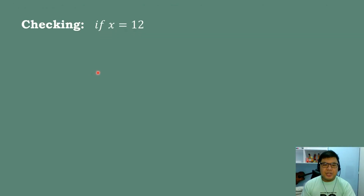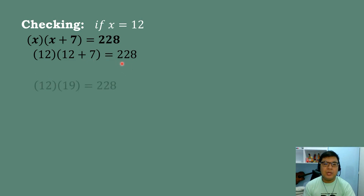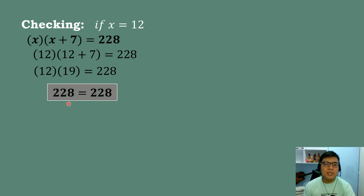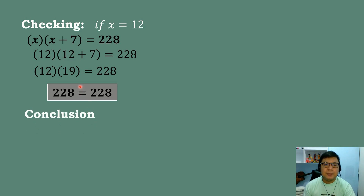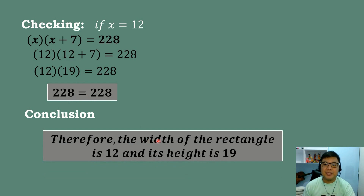Let's check our answer. If x equals 12, we substitute into the equation: 12 times the quantity 12 plus 7 equals 228. 12 plus 7 equals 19, and 12 times 19 equals 228. So 228 equals 228 — both sides are equal. Therefore, the width of the rectangle is 12 and its length is 19, confirming our answer is correct.